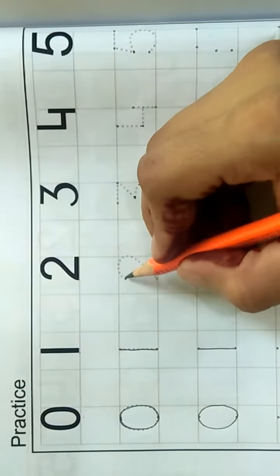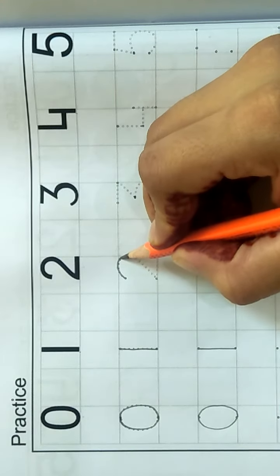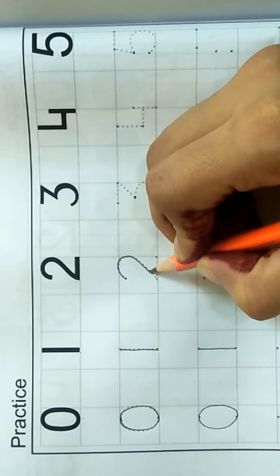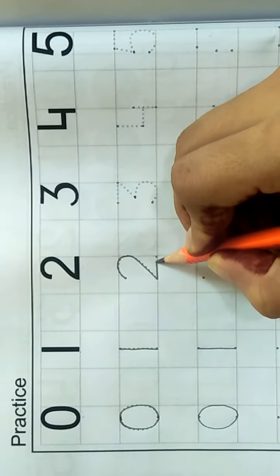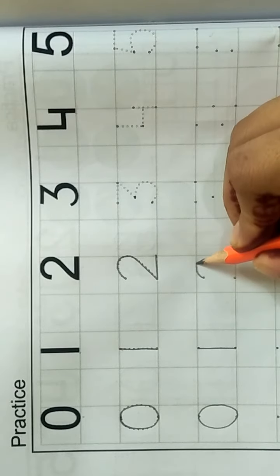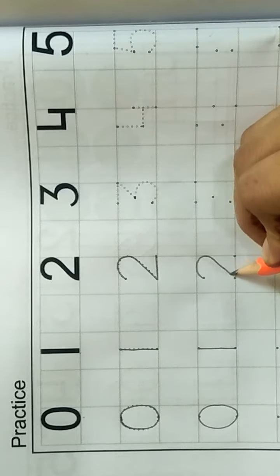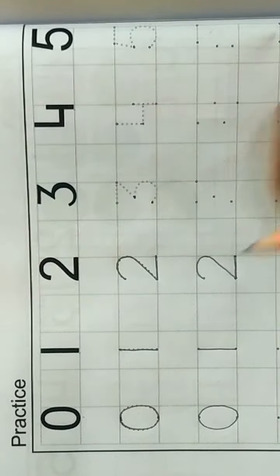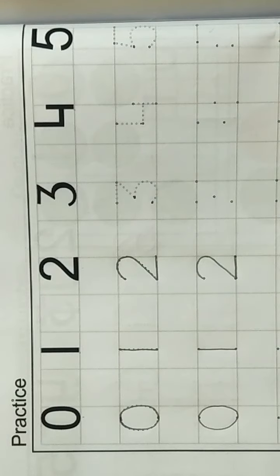2. Round, touch with the lines. Slant, straight. 2. Round, touch with the lines. Slant, straight. Go right side. 2.